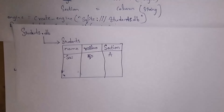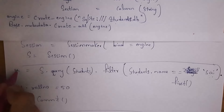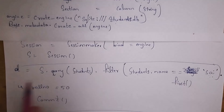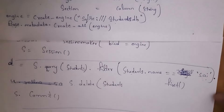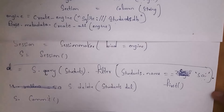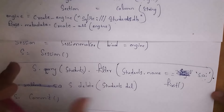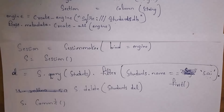For the Delete operation, retrieve the record similarly into variable `d`, then write `s.delete(d)` followed by `s.commit()`. Whenever you run these lines of code it will delete the data from the students table. This is how we perform CRUD operations using SQLAlchemy.